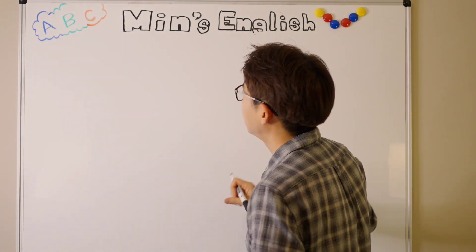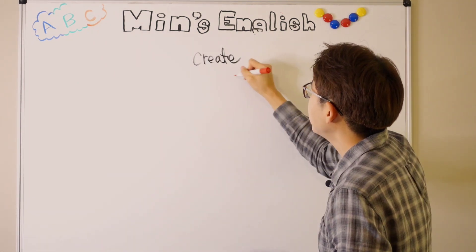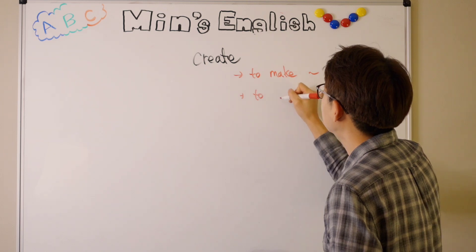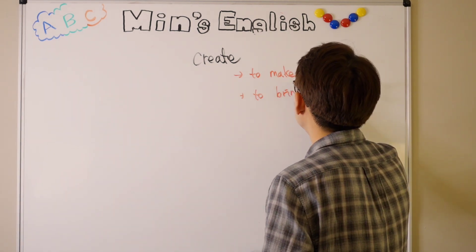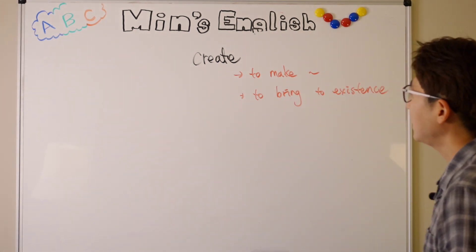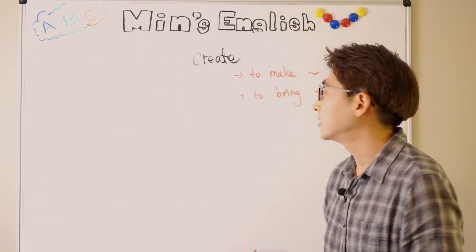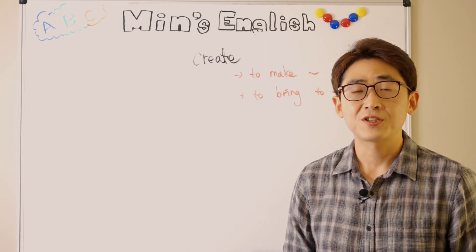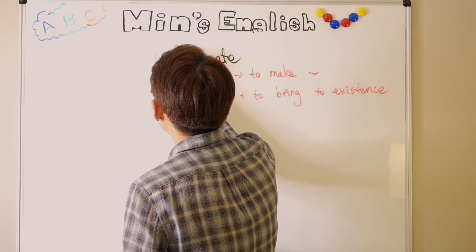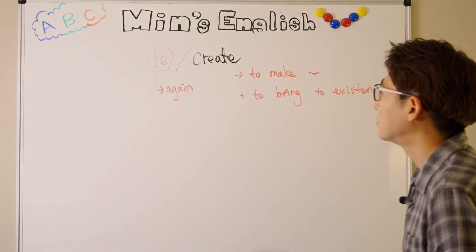Our next example is 'create.' Create means to make something or to bring something to existence — like how God created us, or like how Steve Jobs created the iPhone. So when you put 'RE' in front of this word, it becomes 'again' — 'recreate.'